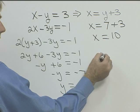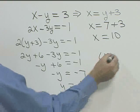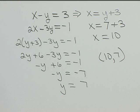So our ordered pair is the x value first which is ten comma y which is seven. So the solution by substitution is the ordered pair ten comma seven.